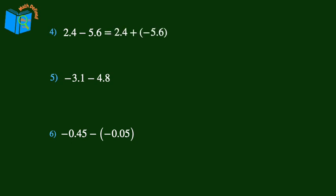We keep positive 2.4 and add the opposite of positive 5.6, negative 5.6. Since the signs are different, we need to subtract and keep the sign of the number with the greater absolute value. Starting in the tenths place, 6 minus 4 is 2, then 5 minus 2 is 3, and we can't forget to bring down the decimal point. Now to determine the sign, negative 5.6 has the greater absolute value, and the final answer is negative 3.2.